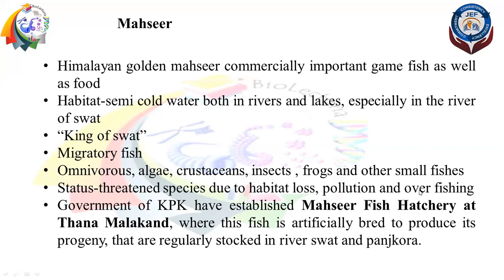Because the taste is good and it is a large-sized fish, it is overfished and its numbers have reduced. The government of KPK has established a Mahseer fish hatchery at Thana Malakand, where artificial breeding is carried out. Fingerlings and seedlings are produced there and then released into the Swat and Panjkora rivers so that the population can be restored.